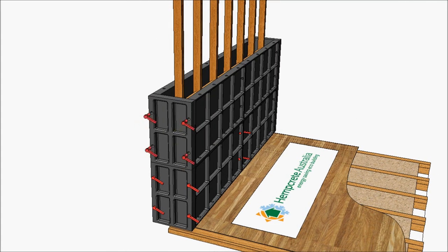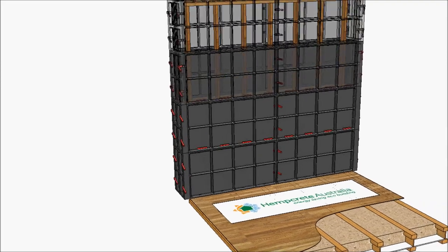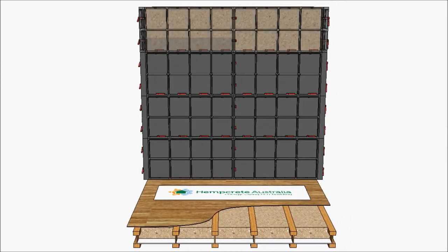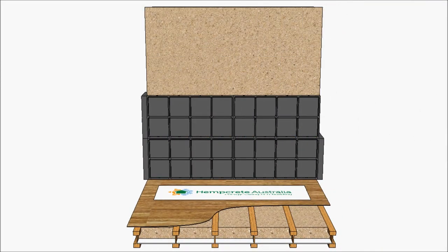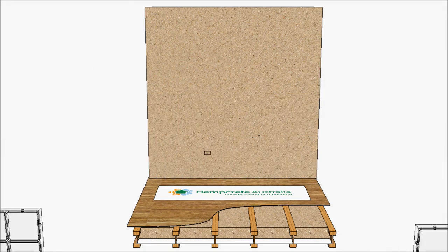With good organisation and the right equipment, the installation of hempcrete is fast and economical. Formwork can be removed in hours. The hempcrete will set within a few days.